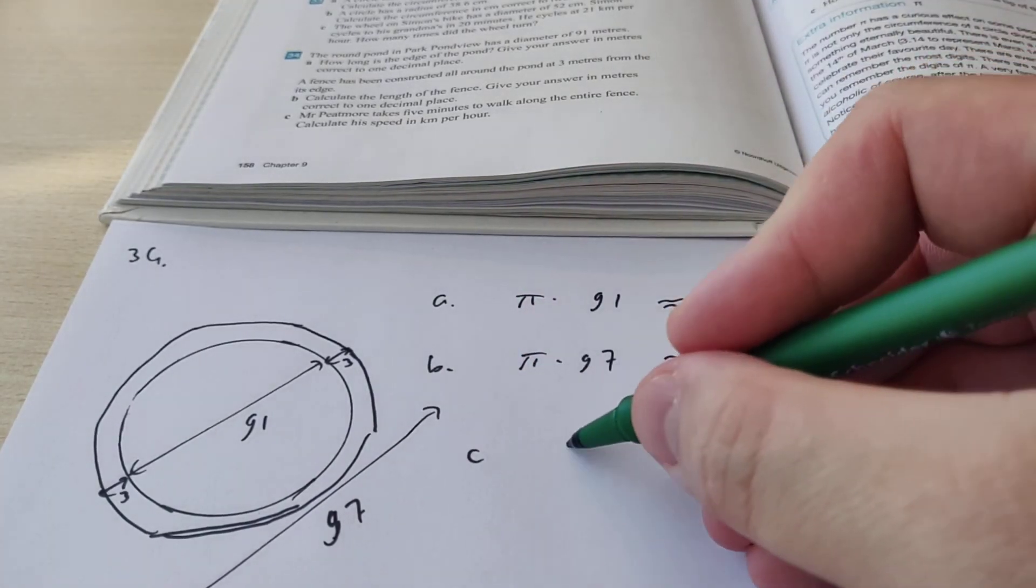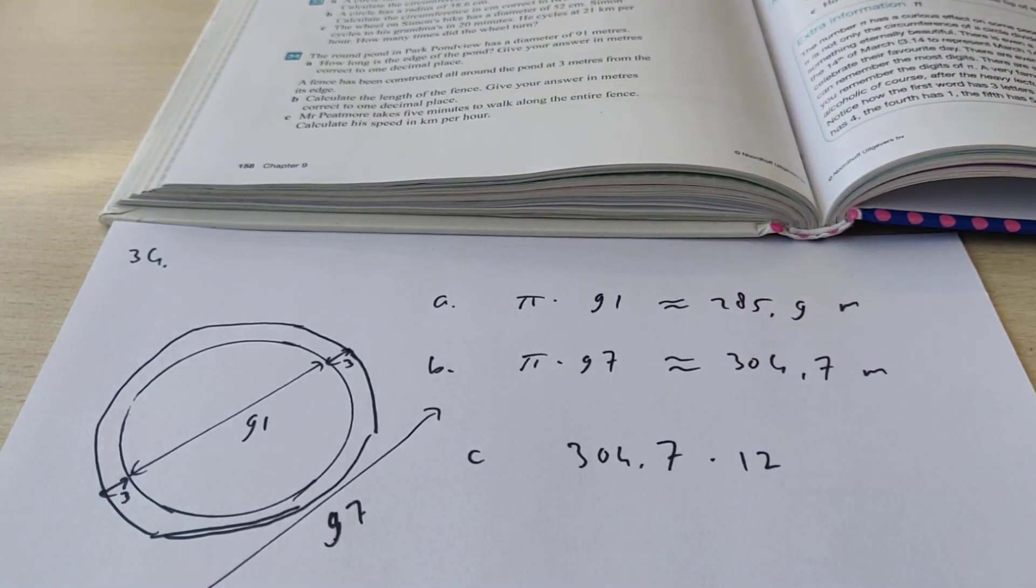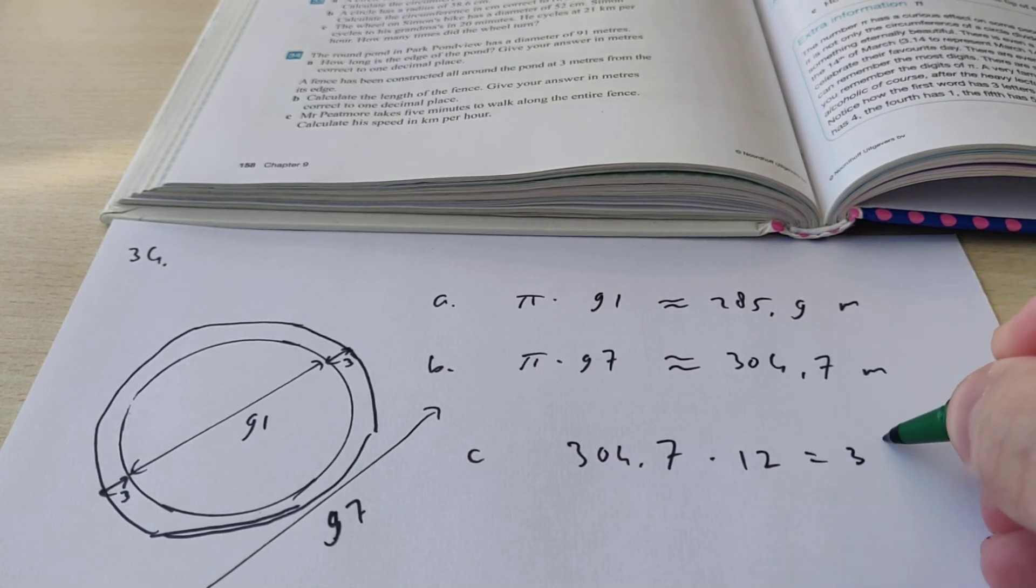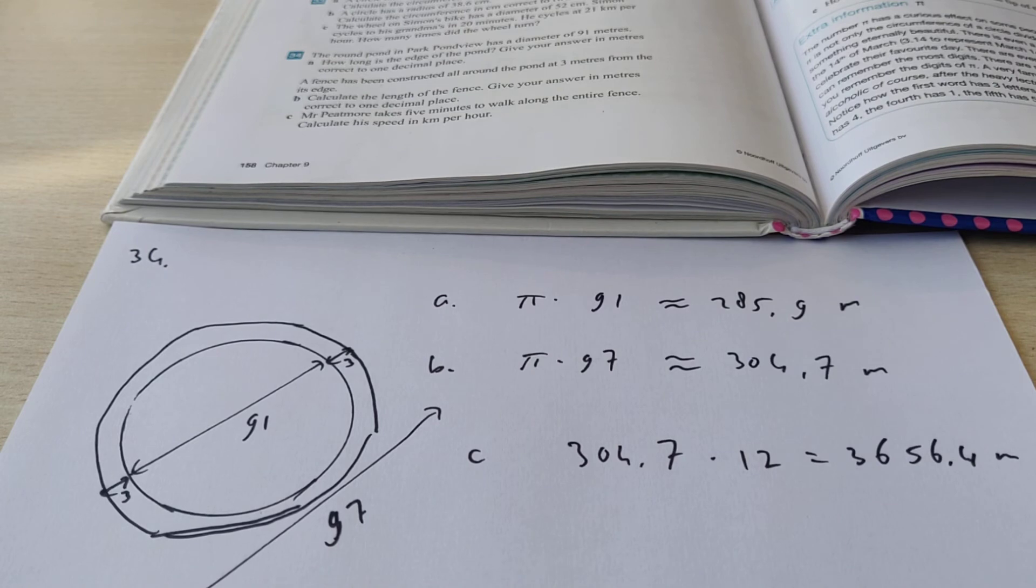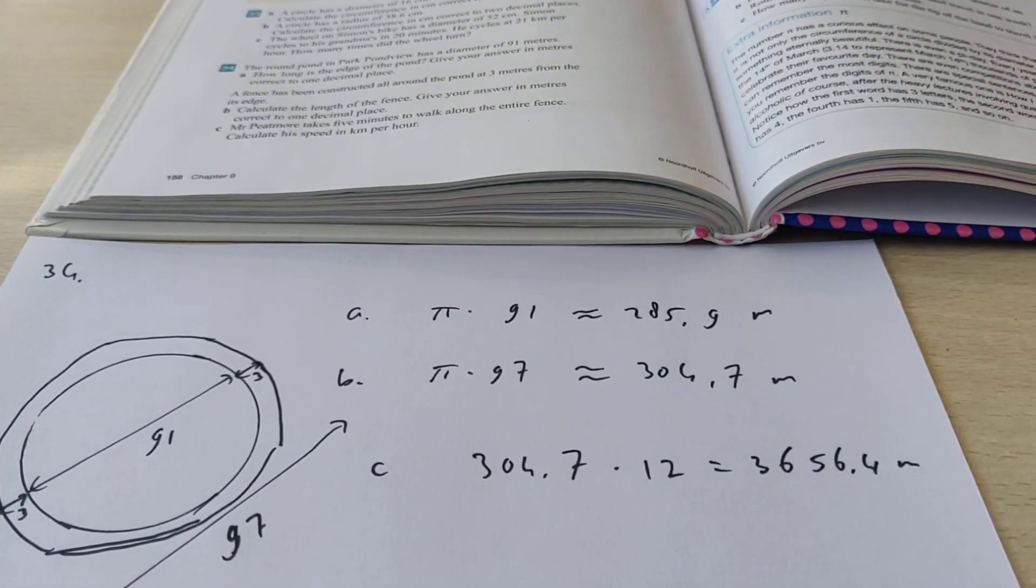For exercise C, you have to do 304.7 times 12. Then you know how much you can walk in an hour. That is 3,656.4 meters if I don't round it off. But the question says calculate his speed in kilometers per hour, so you have to go from meters to kilometers.